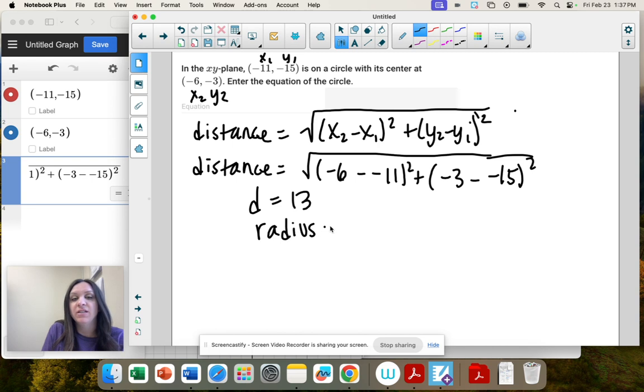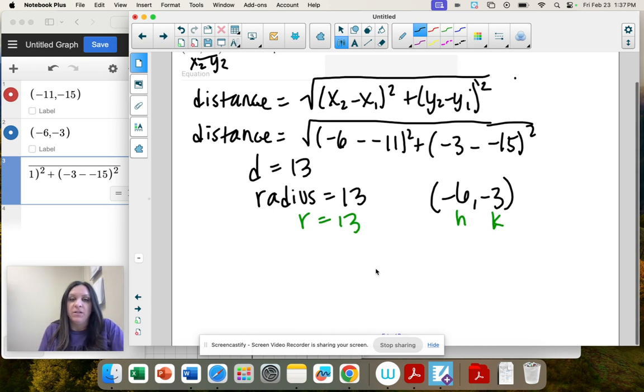So the radius is 13, and then the center is at negative 6, negative 3. And in our formula, that's hk. So r is 13, and then we have hk. So from here, we just need to plug it in.